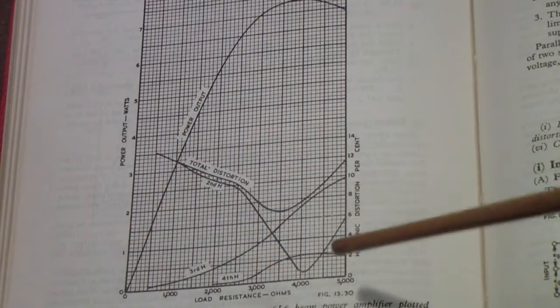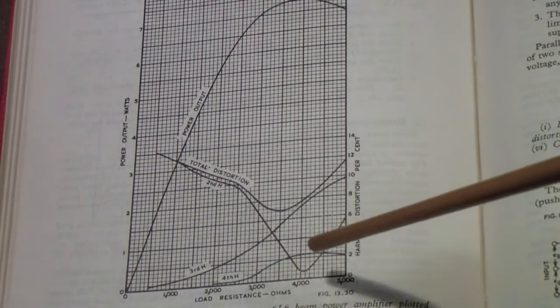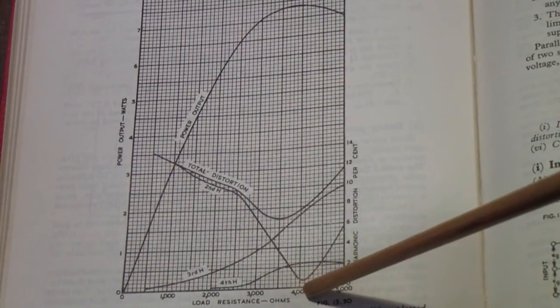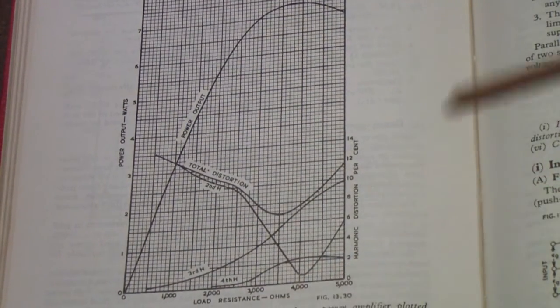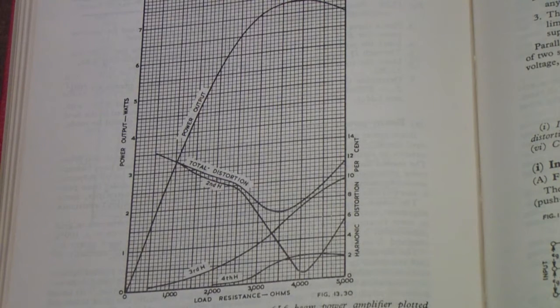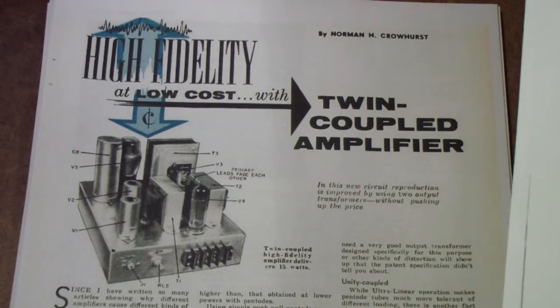This is the load resistance—in other words, what the transformer is presenting. This is both the power output in watts as well as the total distortion. So what you're seeing is that in addition to there being a sweet spot with regard to distortion and power output, there also is a sweet spot with regard to load resistance. That's important in a minute when you start looking at how the different kinds of feedback are affected by the load resistance.